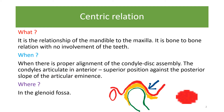Let us begin from the very beginning. We will first try and understand our concepts on centric relation. Centric relation is a relationship of the mandible to the maxilla — that means it is a bone-to-bone relation with no involvement of teeth. It occurs when there is proper alignment of the condyle-disc assembly. The alignment is when the condyle is positioned superiorly and anteriorly against the posterior slope.